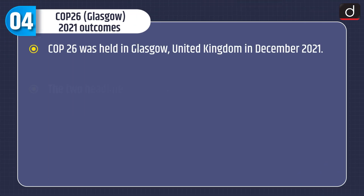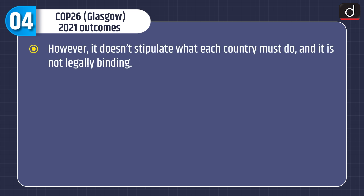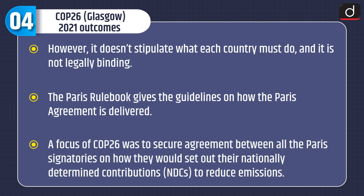Moving on to COP26 Glasgow 2021 Outcomes: COP26 was held in Glasgow, United Kingdom in December 2021. The two headline outcomes were the signing of the Glasgow Climate Pact and agreeing the Paris Rulebook. The Glasgow Climate Pact is a series of decisions and resolutions that build on the Paris Accord, setting out what needs to be done to tackle climate change; however, it is not legally binding. The Paris Rulebook gives guidelines on how the Paris Agreement is delivered, including how countries set out their Nationally Determined Contributions to reduce emissions.